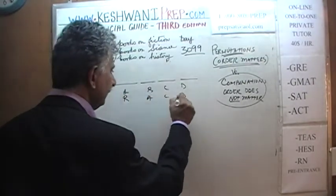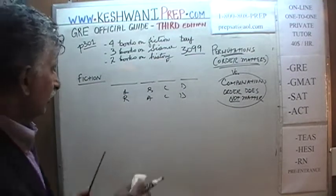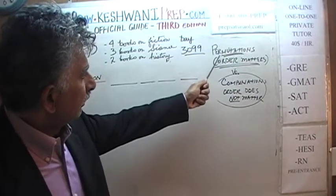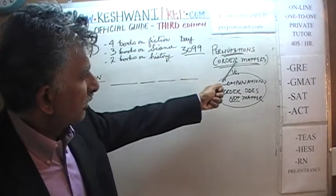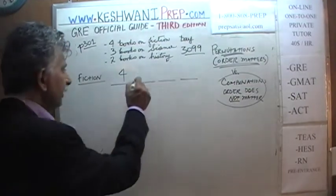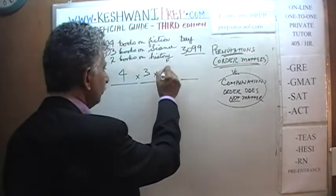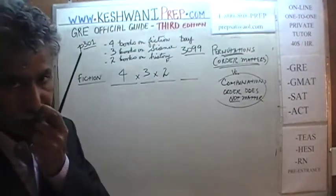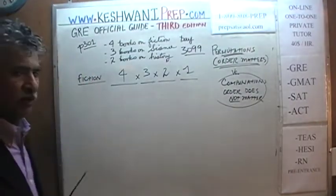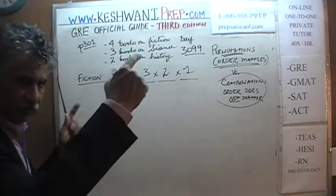Because order matters — and permutations is where order matters — we have four different ways of putting the first book, three different ways to fill up the second spot, two choices to fill up the third spot, and finally the remaining one book goes in the fourth spot. This is how many ways we can arrange the four books on fiction in the first area.